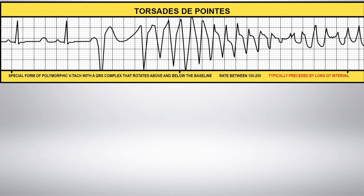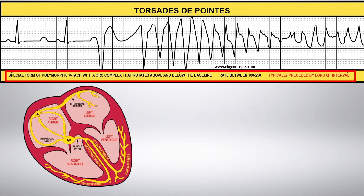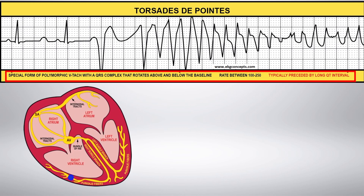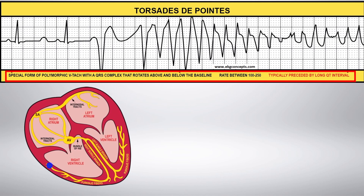Torsades is a polymorphic ventricular tachycardia — poly meaning many — that can originate in multiple sites of the ventricles. This causes the QRS complexes to be wide, bizarre, and greater than 0.12 seconds. It looks similar to VTAC, but the wave amplitude resembles a twisting and turning motion along the baseline, as illustrated by the blue arrow.